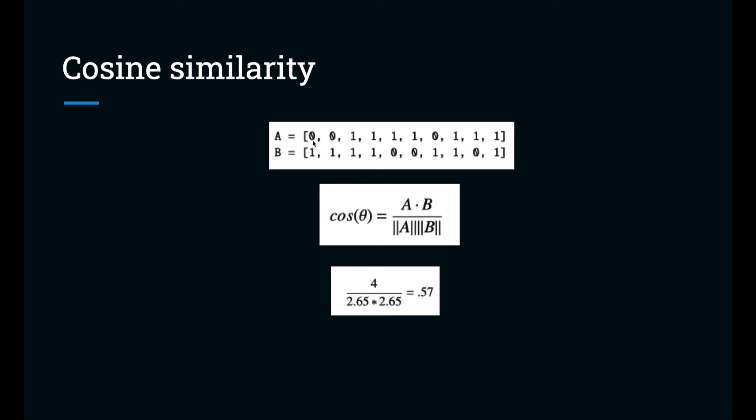So if we do a dot product here, multiplying each element by the corresponding element, we're going to have a lot of zeros. Here's a one, another one, the third one, and the fourth one. So our dot product here is four.